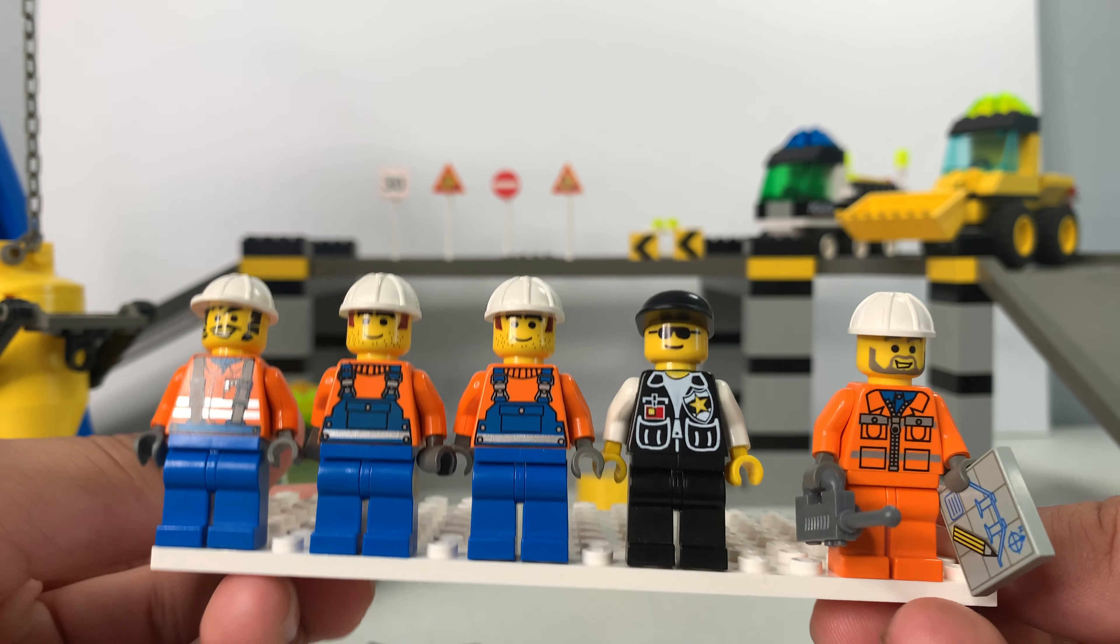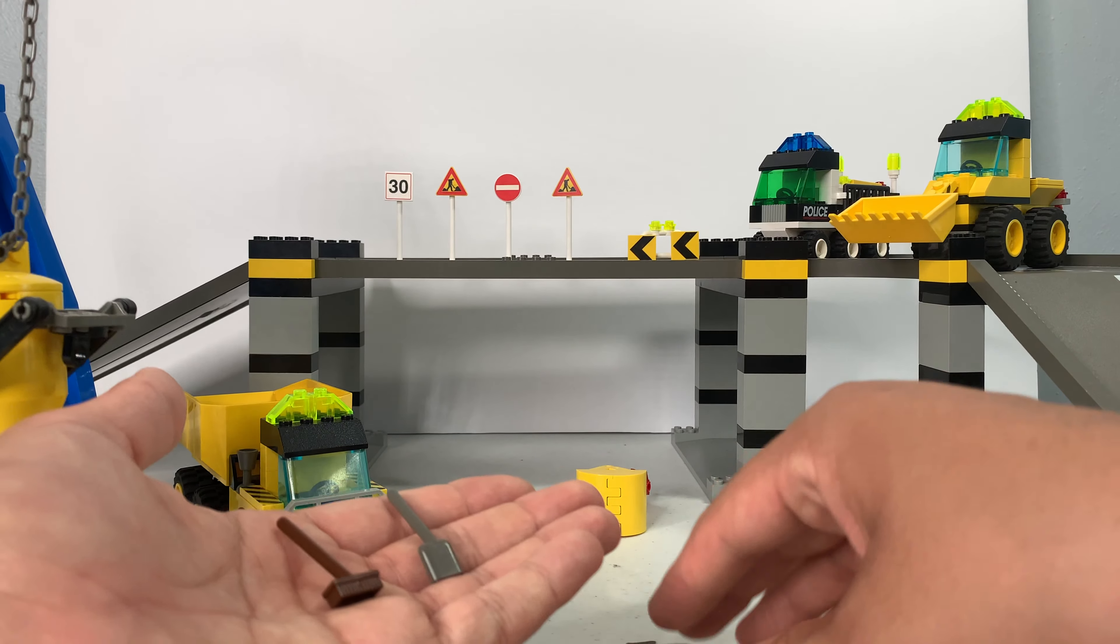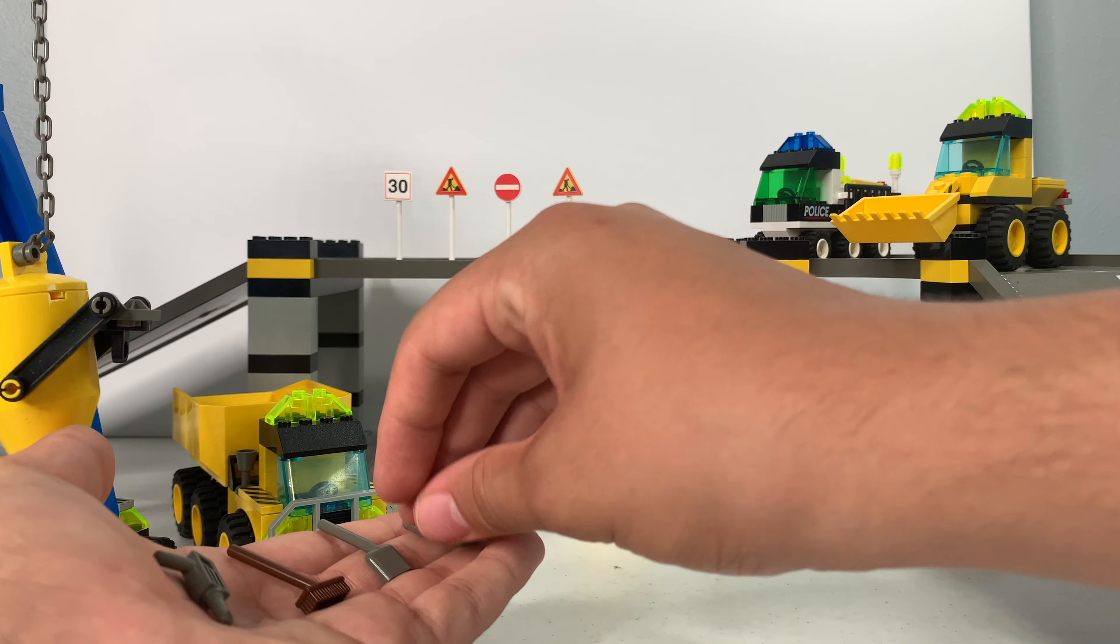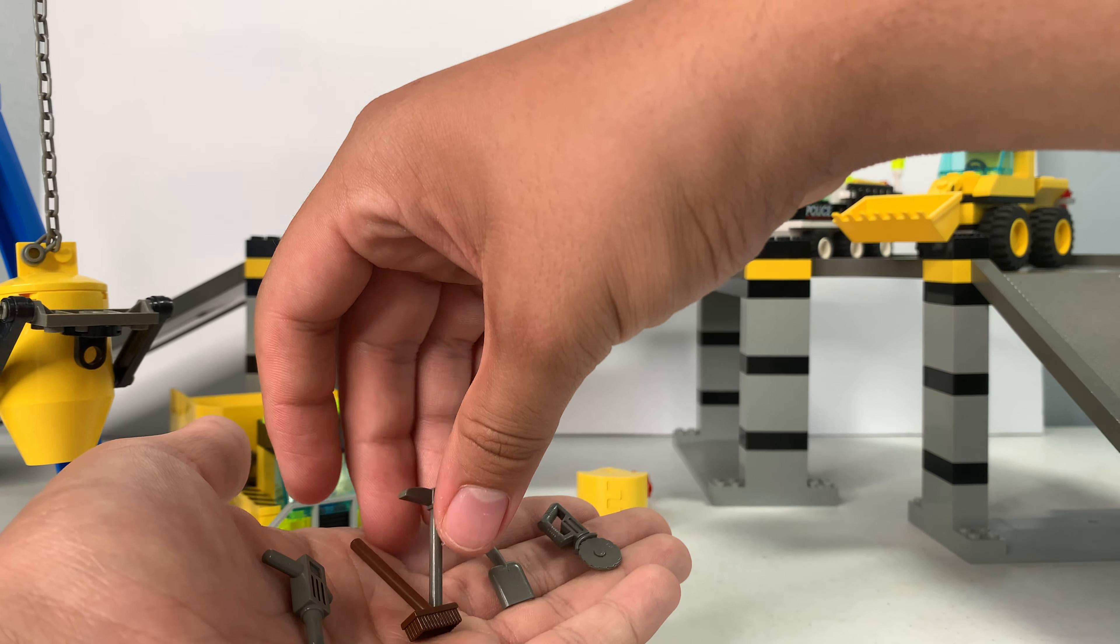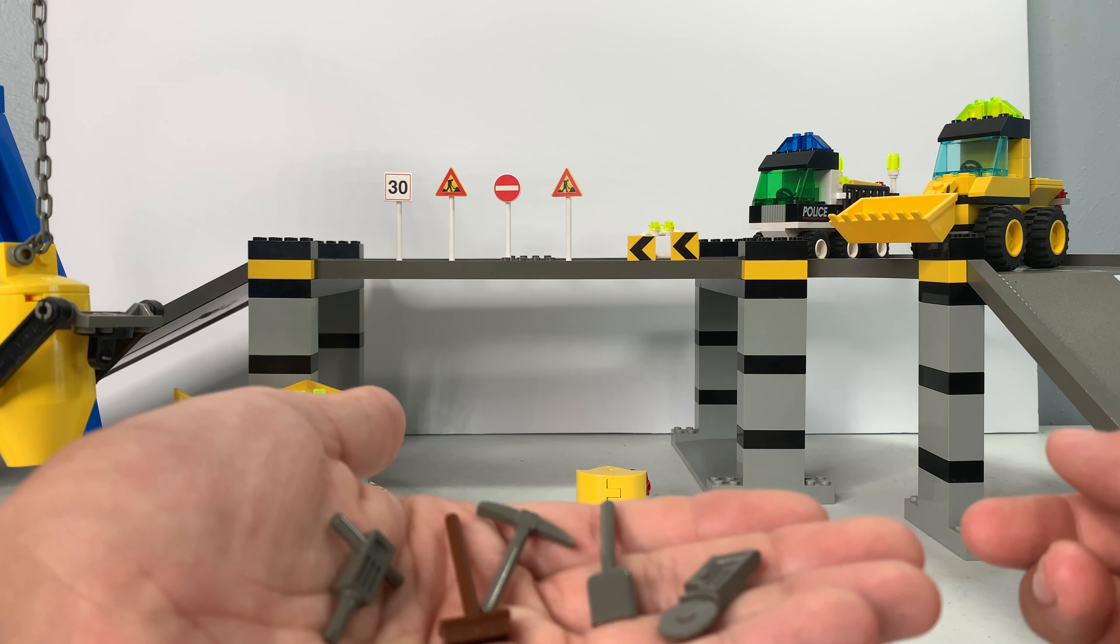Before we get into everything, this set also came with a bunch of little accessories, so we have a pickaxe, a jackhammer, a shovel, a buzz saw, and a broom.